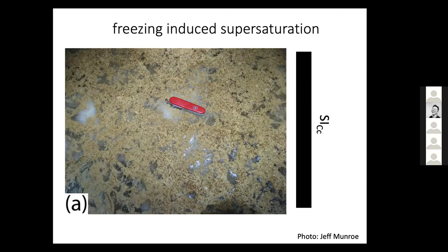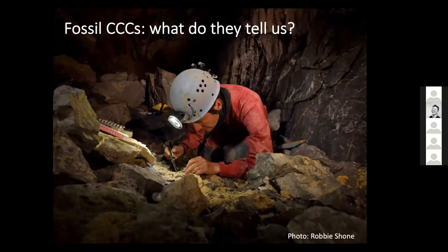Here's a photo of what we think are modern-forming CCCs from a cave called Winter Wonderland Cave in the Uinta Mountains of Utah. The cave has perennial ice, and CCCs discovered there were scattered on top of the ice, almost dust-like, precipitating from thin layers of water on pre-existing ice. That's an example of CCCs forming in situ under modern conditions. But I'm interested in fossil CCCs — going into a cave where we don't see any ice at all, but CCCs are everywhere.